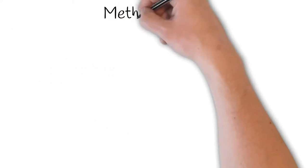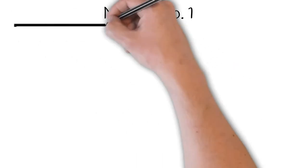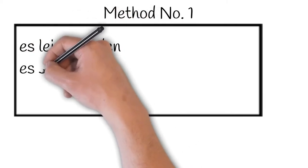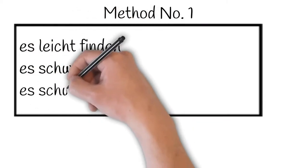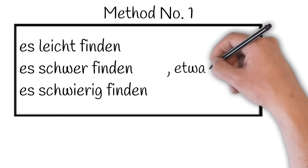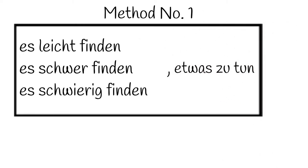This is method number one. You can use any of the following three phrases: es leicht finden, es schwer finden, or es schwierig finden, followed by a comma and then the phrase etwas zu tun in order to express how easy or hard you find something.